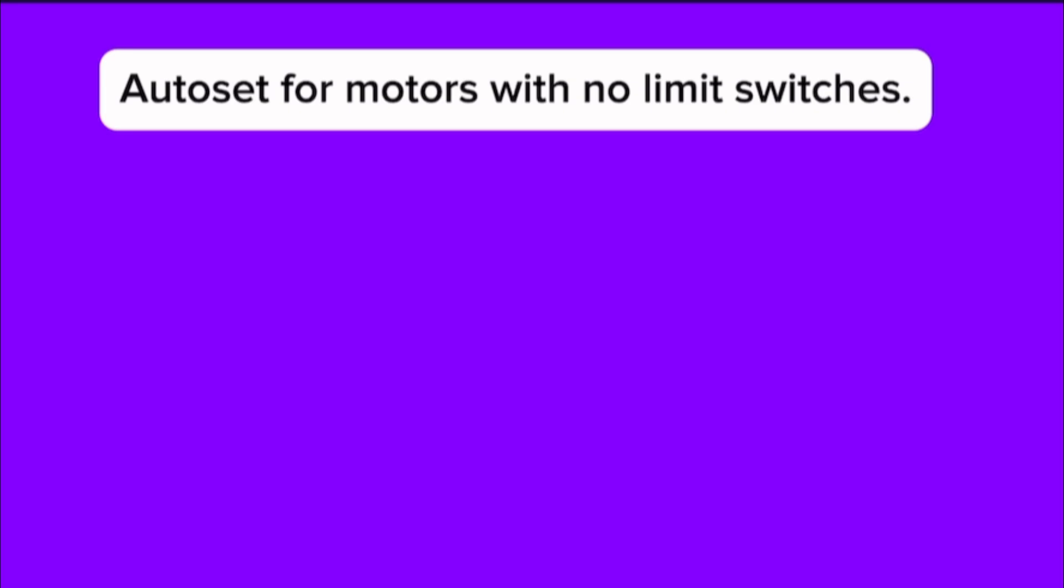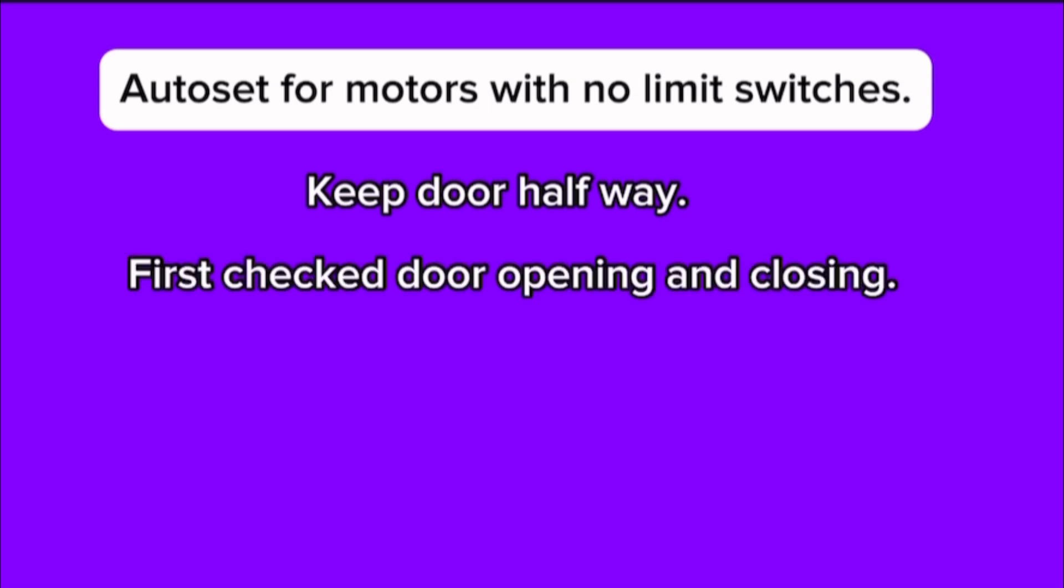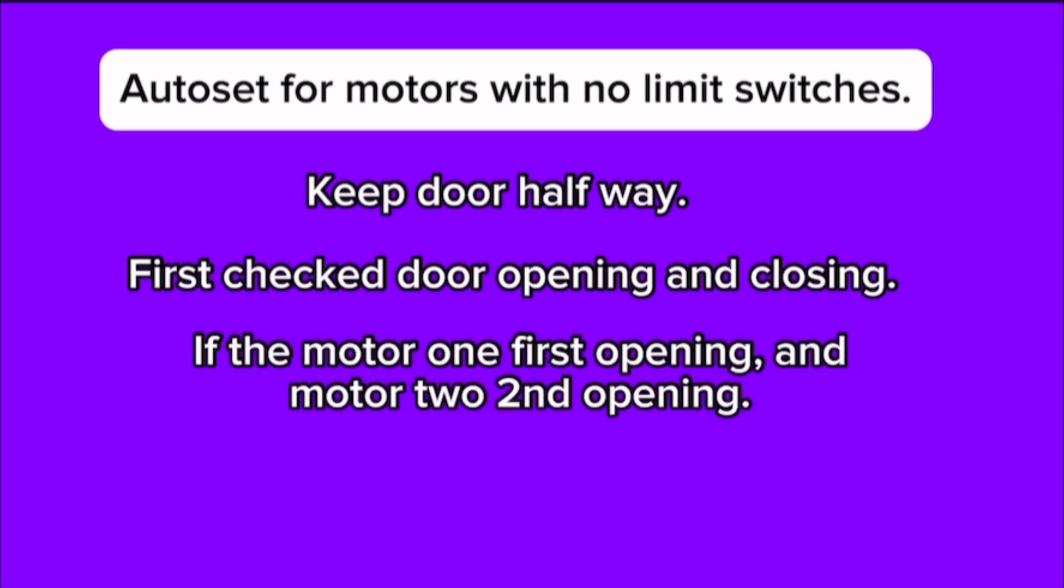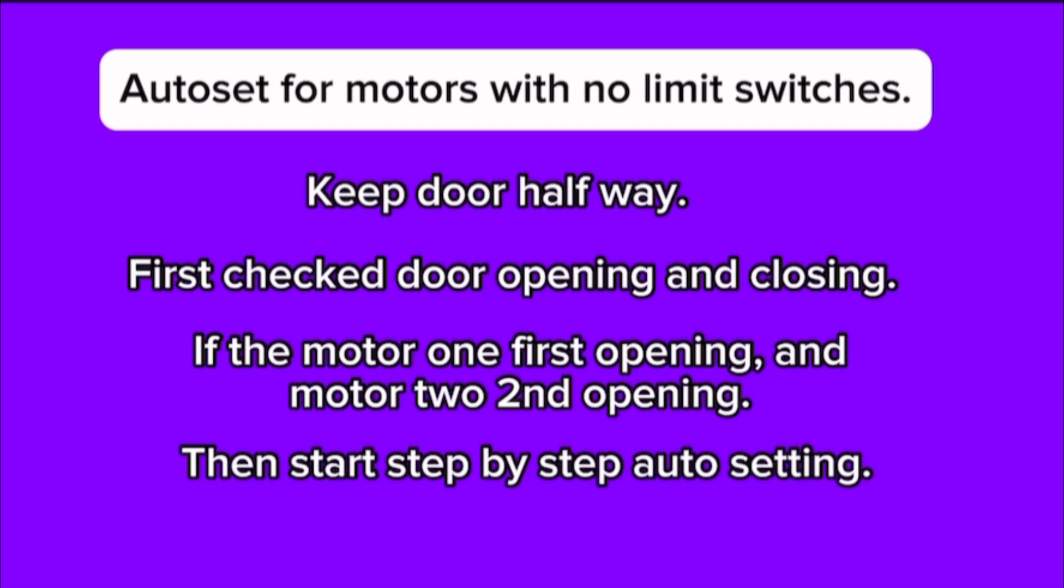Auto set for motors with no limit switches. Keep door halfway. First, check door opening and closing. If motor 1 opens first and motor 2 opens second, then start step-by-step auto setting.